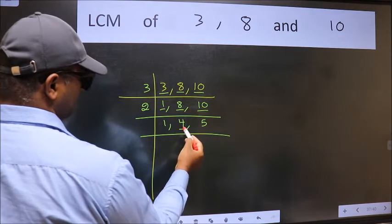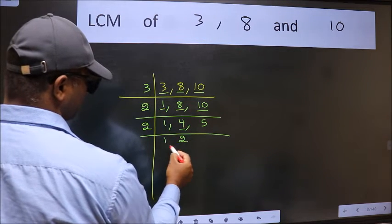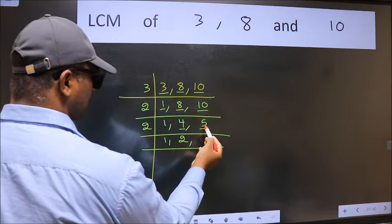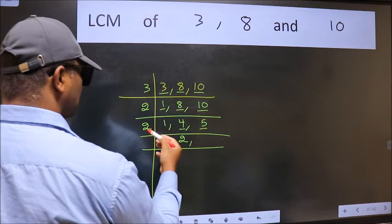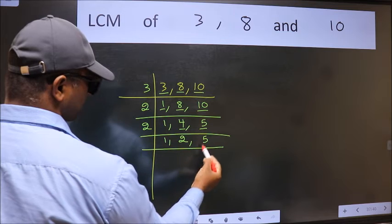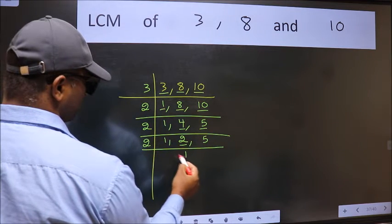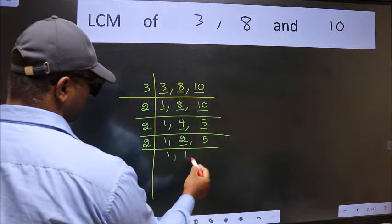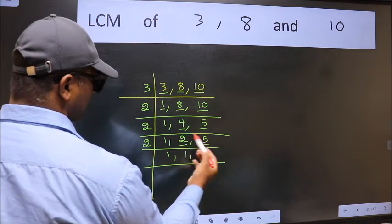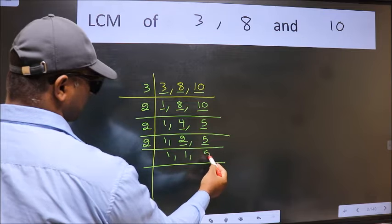Now here we have 4. 4 is 2 times 2. The other number 5 is not divisible by 2, so we write it down as it is. Now here we have 2. 2 is a prime number, so 2 divides 2 once. The other number 5 is not divisible by 2, so we write it down as it is.